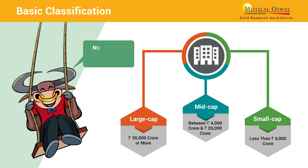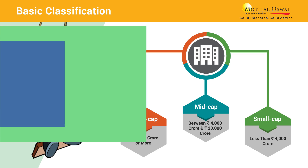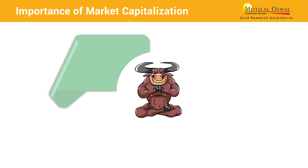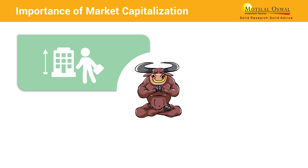Note that there is no specified hard and fast classification. These definitions are purely based on our internal criteria, which we follow for stock selection and bifurcation. Market capitalization is used by investors to determine a company's size.